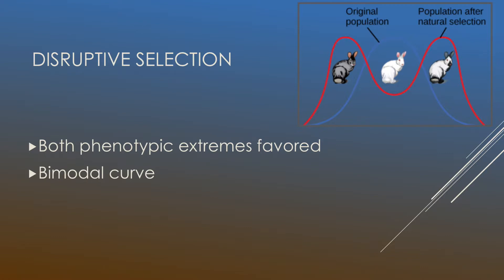Secondly, we have disruptive selection in which both phenotypic extremes are favored. So in directional selection, only one phenotypic extreme is favored. In disruptive, both phenotypic extremes will be favored. And this produces what is called a bimodal curve.